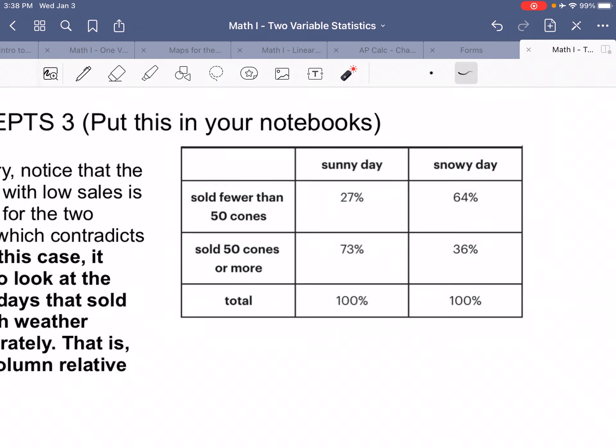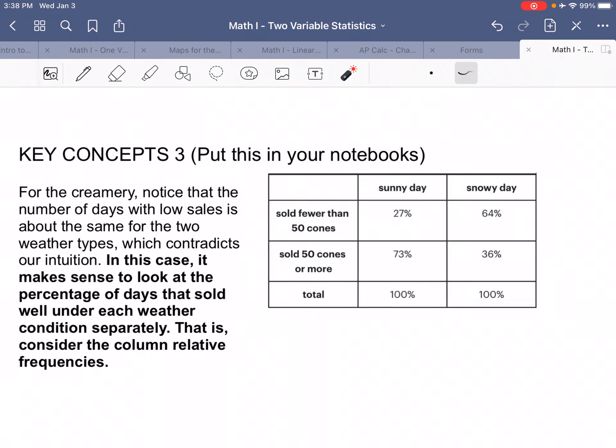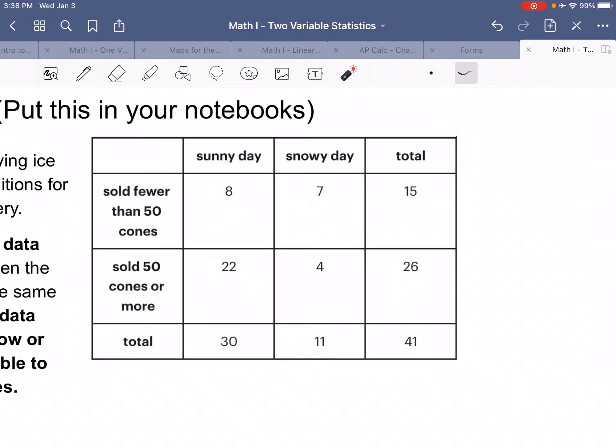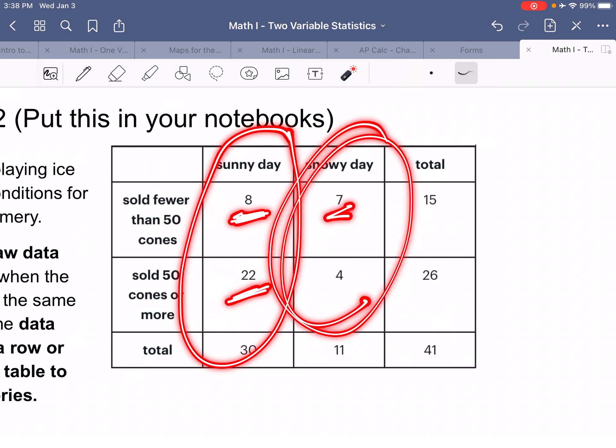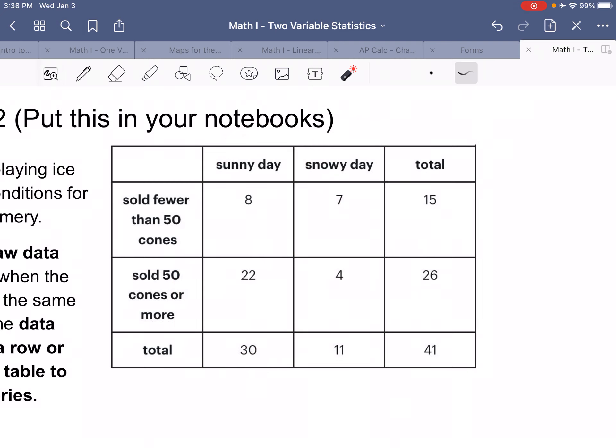Let's take a look at an example here. This down here is some data that was collected for a sunny day versus snowy day and how many snow cones were sold. We can look at sunny days by themselves and find the percent with fewer or more than 50 cones, and then we can look at snowy days by themselves and see if there's some sort of a relationship.